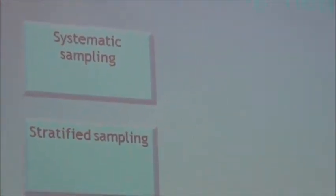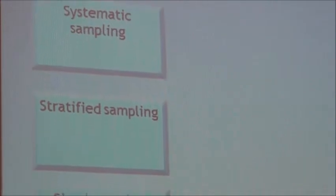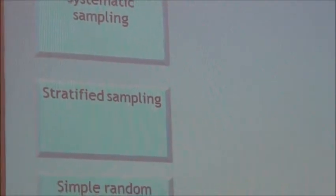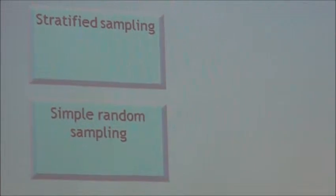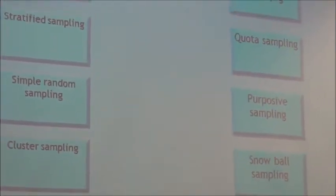In probability sampling, every element in the population has a known probability of being chosen — a known probability. This means the population is known to you, and the probability of any element being chosen is one out of the total.